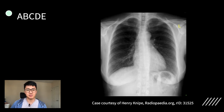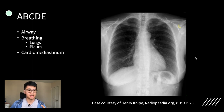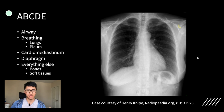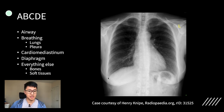Now let's look at the actual search pattern. Most people will use an ABCDE structure: airway, breathing, cardiomediastinum, diaphragm, and everything else. For airway, I start by looking at the trachea and making sure it's fairly midline. For breathing, I compare the lung field side by side, looking at the upper zone on one side and comparing it with the other side, then going through different zones. Don't forget to look at the pleura as well, so make sure you look at the costophrenic angles in case there's a small effusion. Follow the edge of the pleura and look for pneumothorax right into the apices on both sides.